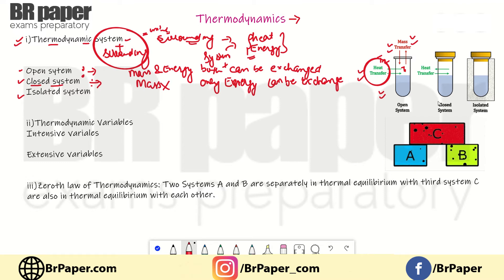As shown in the diagram, in a closed system, mass or water cannot be exchanged with the surroundings. However, the walls are conducting walls, so heat can be exchanged with the surroundings through those walls. That system is called a closed system.